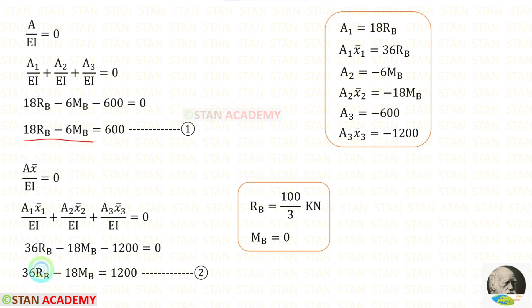Now there are two equations. We can use a calculator to solve them. Using the calculator, I have obtained RB = 100/3 kilo Newtons and MB = 0.